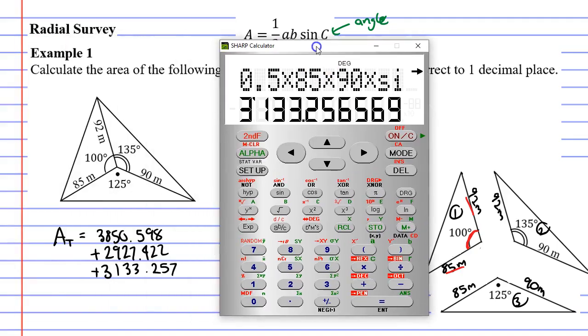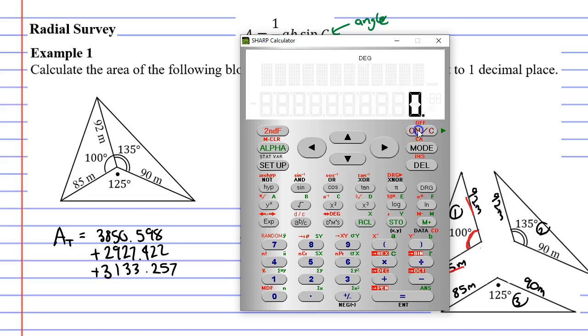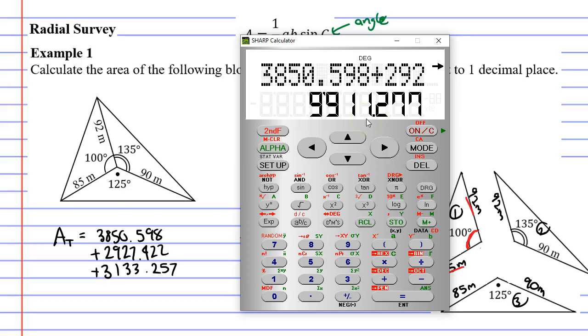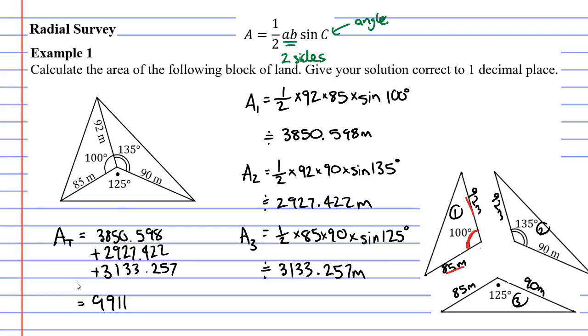Because my final answer is rounded to one decimal place, I put all of these to three decimal places. You probably want to have them to more decimal places than your final answer. That just helps so you don't throw off that final solution. 3850.598 plus 2927.422 plus 3133.257 equals. And we get 9911. If we do it to one decimal place it would be 0.3. So this is 9911.3.